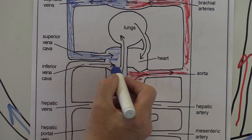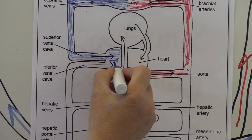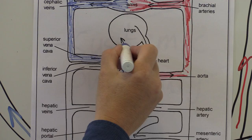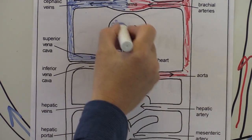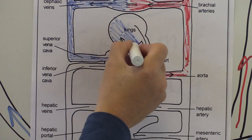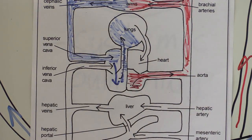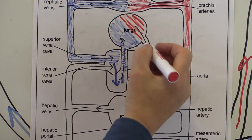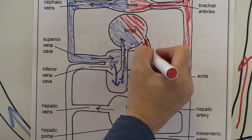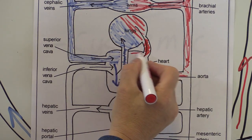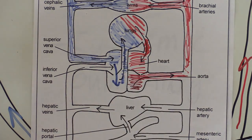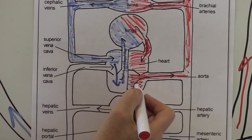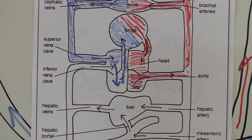From the right atrium the blood's going to go through to the right ventricle and from there to the lungs. As the blood arrives in the lungs it's going to be dark red and deoxygenated. But then as it goes through the lungs it's going to become oxygenated and bright red again, draining back via the pulmonary veins to the left atrium, ready to go to the left ventricle to be pumped out again into the systemic circulation.